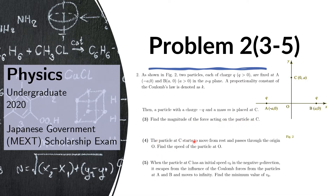The particle at C starts to move from rest and passes through the origin O. Find the speed of the particle at point O. When the particle at C has an initial speed v₀ in the negative y direction, it escapes from the influence of the Coulomb forces from the particles at A and B and moves to infinity. Find the minimum value of v₀.